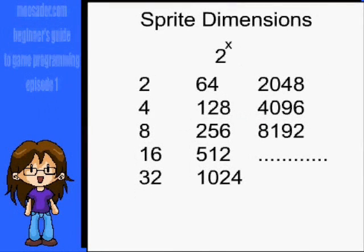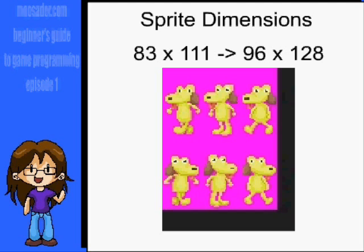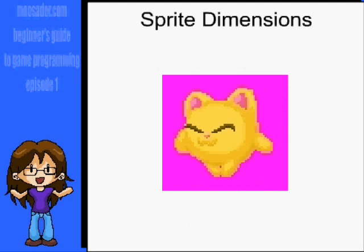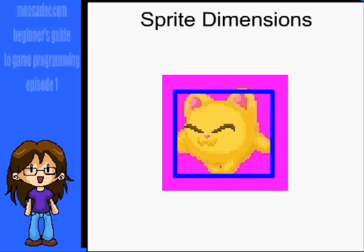Sprites and sprite sheets should always have a power-of-two dimension. Allegro can load sprites at irregular sizes, but only because Allegro does the work for you to resize the image file. Computer hardware reads image files at power-of-two dimensions. This might create unwanted extra space on your sprite, but you can make up for it in the code by specifying where the solid region will be for your collision detection.